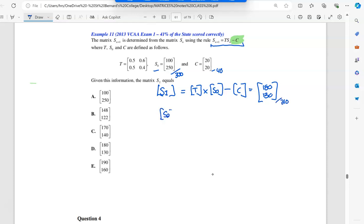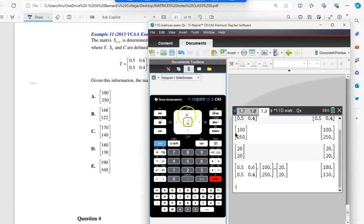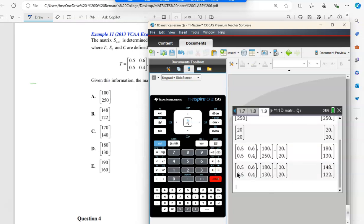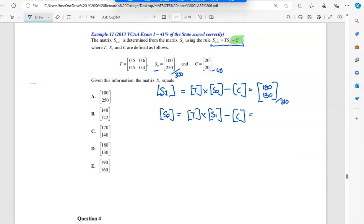So then we actually want S_2. So this is where we would do the transition times S_1 minus C. A quick way to do it on your calculator is just highlight the statement before and you change this one. So 180 and 130. Now, we should drop another 40. So hopefully we get down to 270. And is that correct? Yep. So we get 148, 122. So the answer was B.